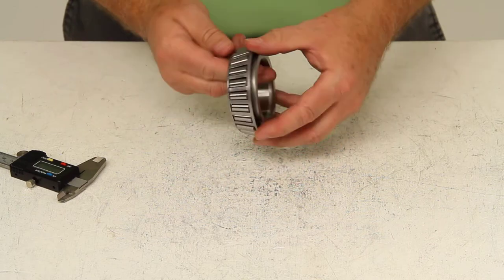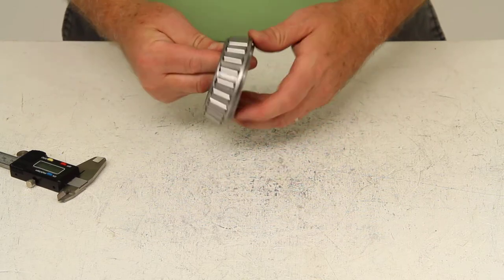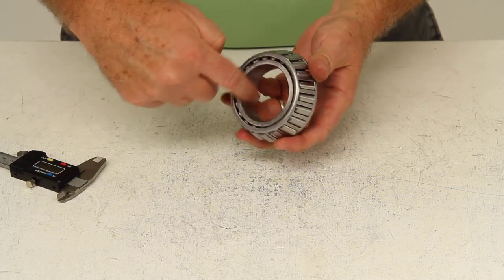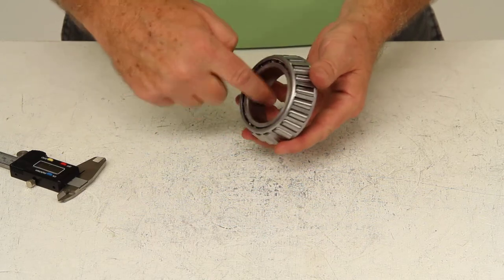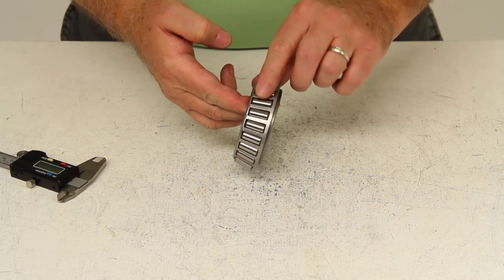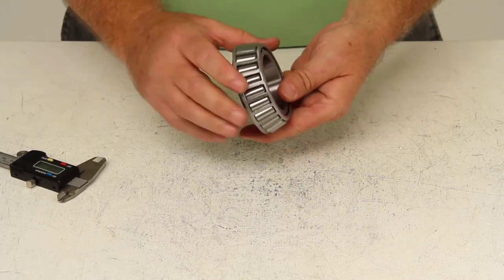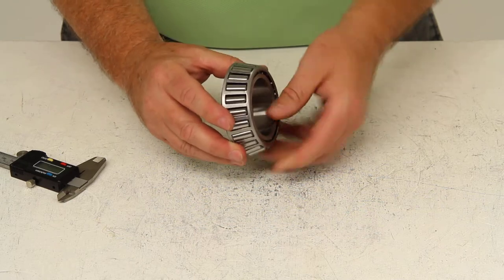Now this wheel bearing does consist of three parts. The inner ring or cone is in the middle here, and it rolls around the tapered roller bearings right here. The tapered roller bearings are held in a cage or roller retainer.